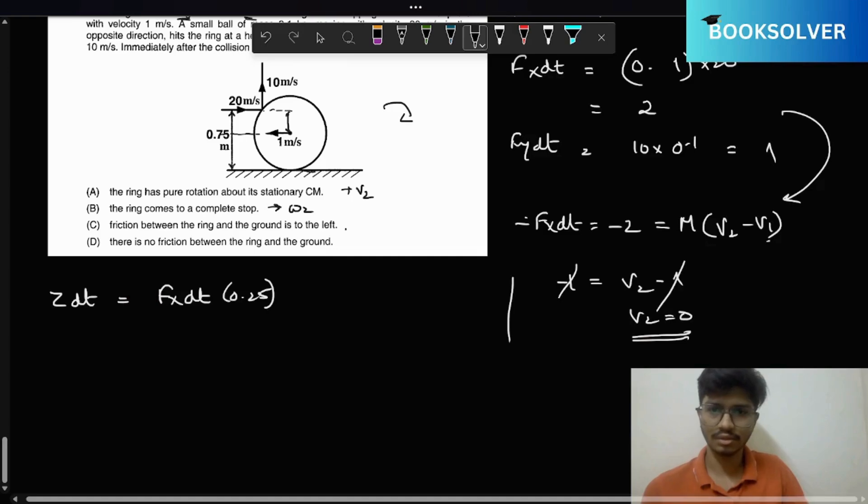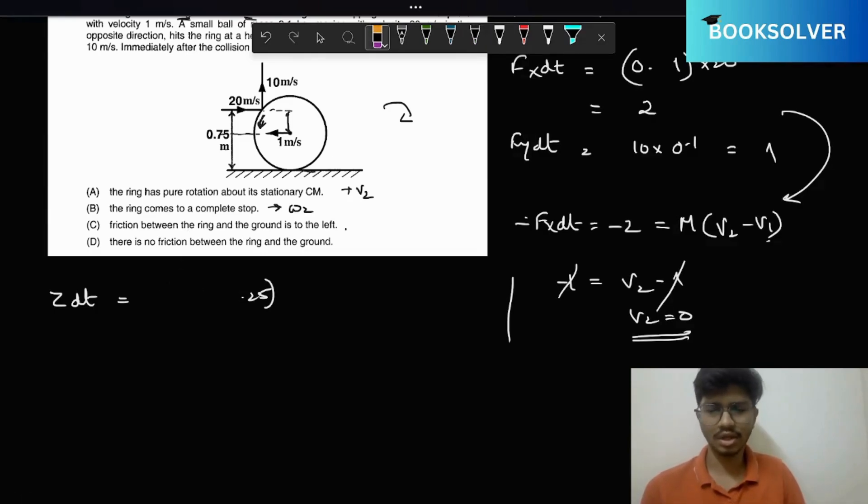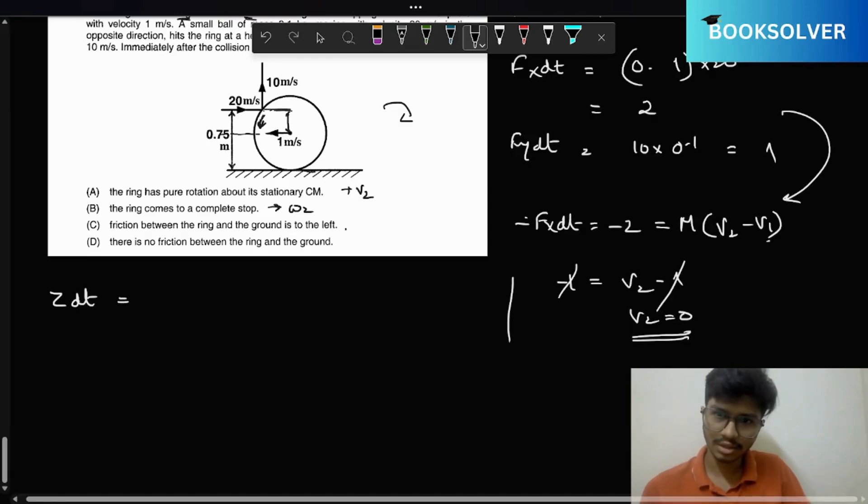Initially it was rotating in this direction. That means we'll assume this to be negative because the initial rotation, let's take that as positive. So that is minus Fy dt, and for Fy this is the direction, this is the length we need.